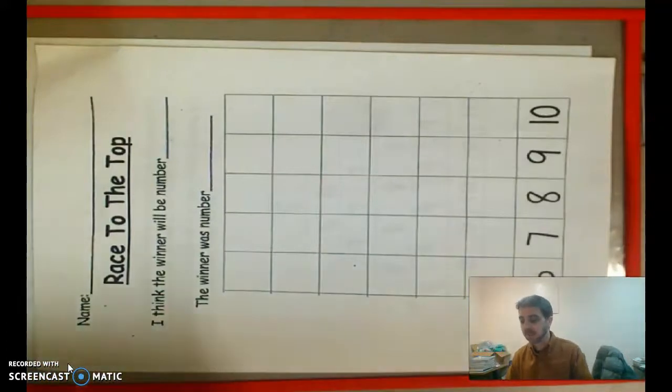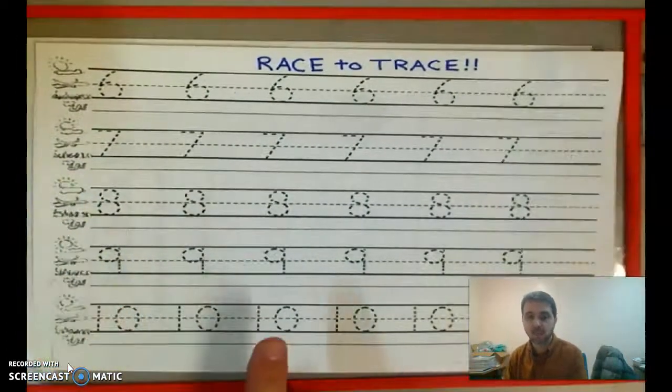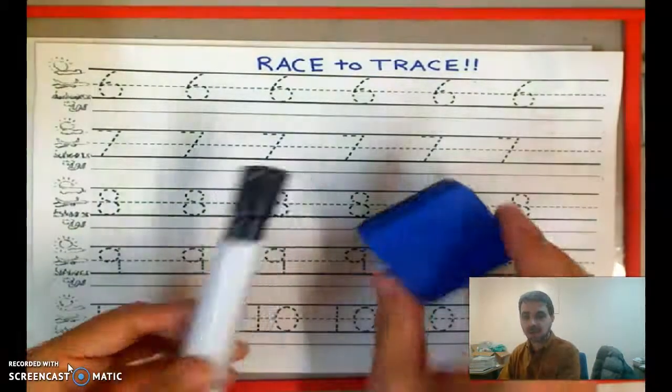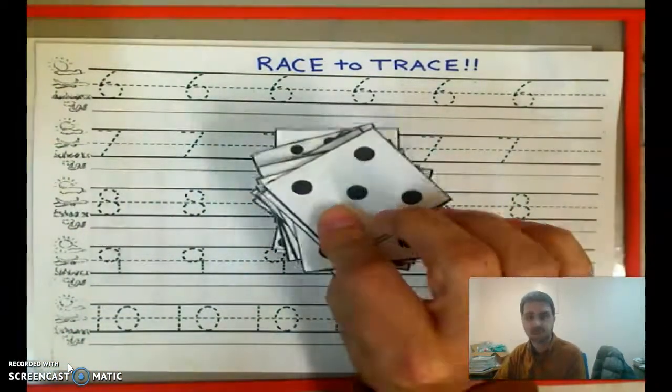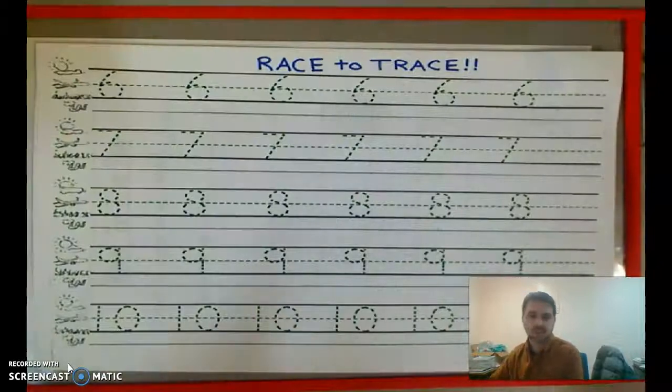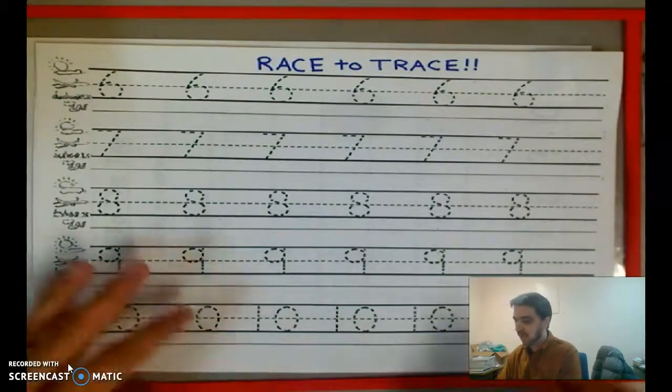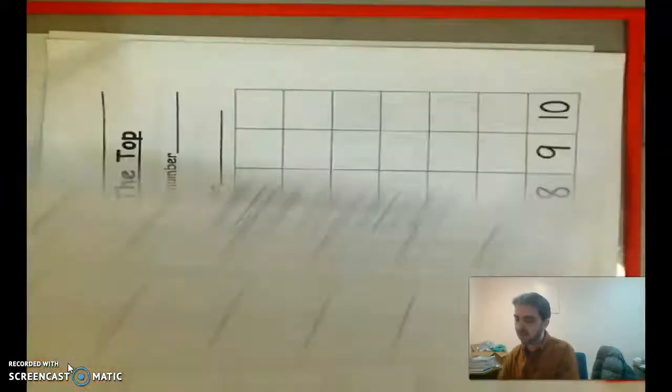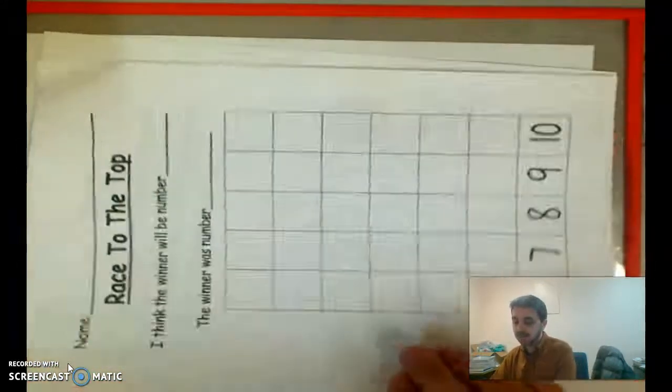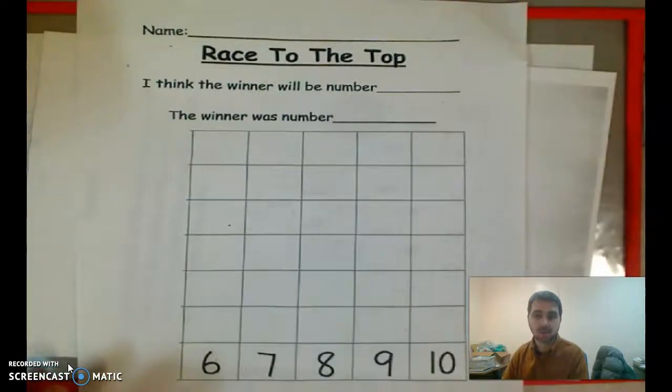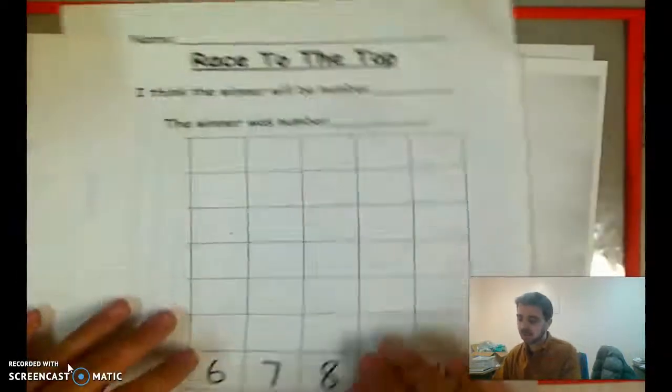You can also play, and for this one, all you need is your marker, eraser, and your dot cards six to ten. If there's some fives in there, that's okay. Just ignore them. Or you could play Race to the Top. You need the same materials. All you need is a marker, eraser, and your dot cards.